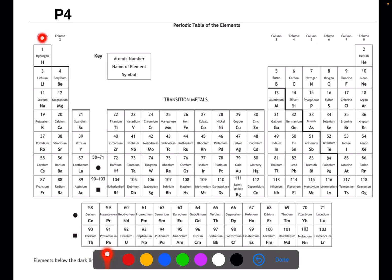We have valency 1, 2, 3, 4, 3, 2, 1, 0. This page is quite useful for when you're writing formulae. You also have a dark line which separates the metals which are on the left from the non-metals on the right.